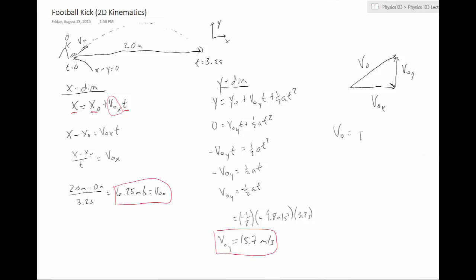So v zero is just equal to square root of v zero x squared plus v zero y squared. Let me go in and plug in our numbers. Let's do 6.25 squared plus 15.7 squared. All right. We find that the initial velocity total was 16.9 meters per second.